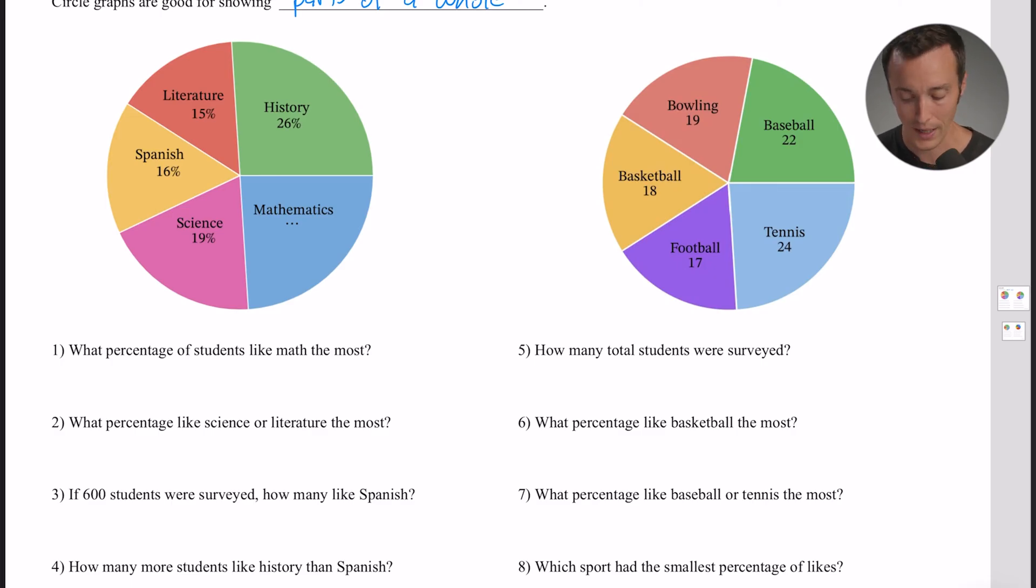It says what percentage of students like math the most? Well, one thing you have to know about circle graphs is that the whole thing has to add up to 100. So if I think about that, the whole thing has to add up to 100. How much do the other categories account for? If you take the numbers for history, literature, Spanish, and science and you add them all up, that's going to be 76% total. So there's 100 in the circle and we have 76 that's accounted for. What does that leave over? Well, 24% must be math.